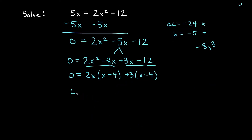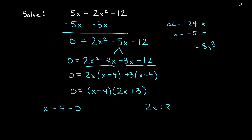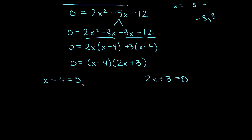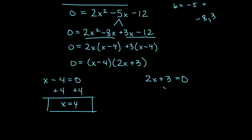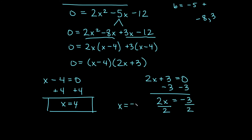So our factors are 0 equals (x minus 4) times (2x plus 3). Now that we have factors multiplying to give zero, the solutions are when each factor equals zero. For (x minus 4) equals zero, I add 4 to both sides and get x equals 4. For (2x plus 3) equals zero, I subtract 3 from both sides to get 2x equals negative 3, then divide by 2, giving x equals negative 3/2.